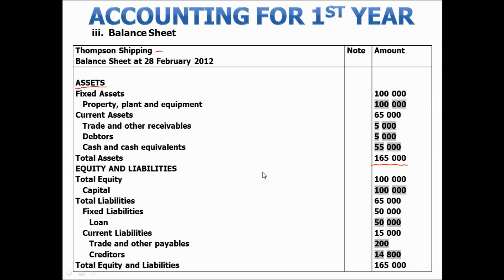Next, the equity and the liabilities, which will be the total of all the equity and all the transactions affecting liabilities of the enterprise. These are also added together to give us a total. Very importantly, remember that your total equity and liabilities must always equal your total assets. This we learnt in the basic accounting equation, where assets on the one side must always be equal to equity plus liabilities.